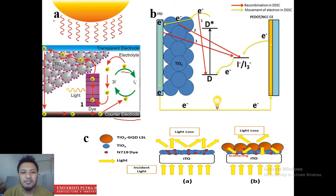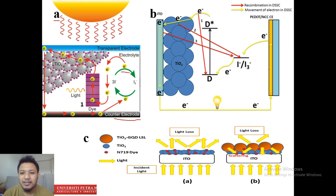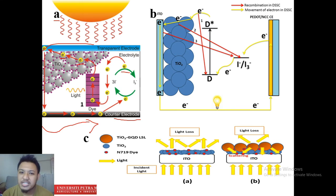That's figure A — how the DSSC works. Moving on to figure B: we know a simple definition of how DSSC generates electricity, but it's not that easy. There are many problems to overcome in order to have high power conversion efficiency. These all happen at the photo anode. The electron must travel one way — from the dye, to the photo anode, to the counter electrode, to the redox electrolyte, and back to the dye — to produce more current and voltage.